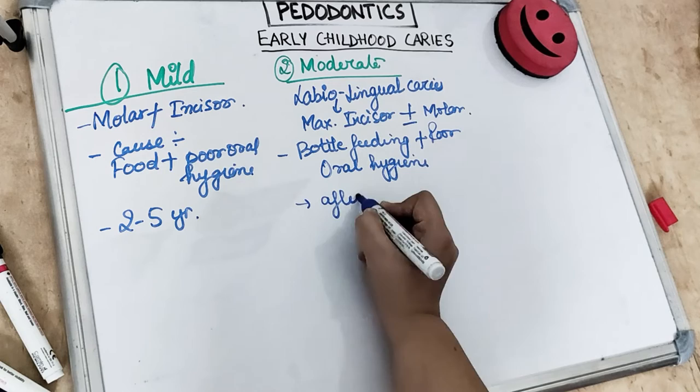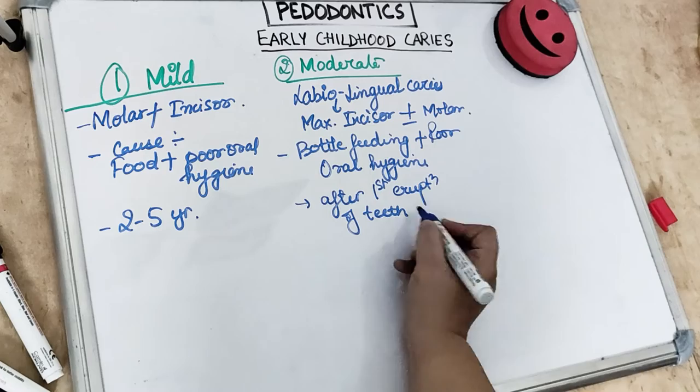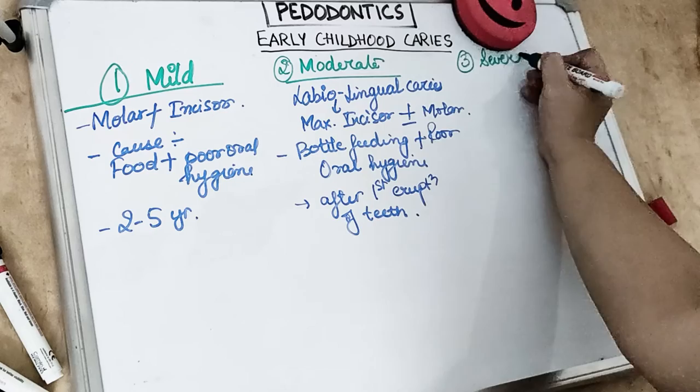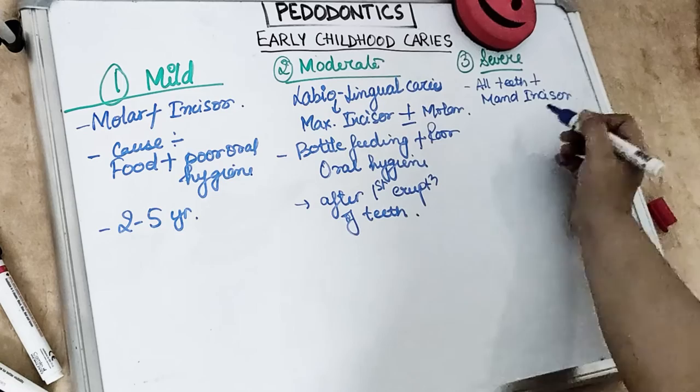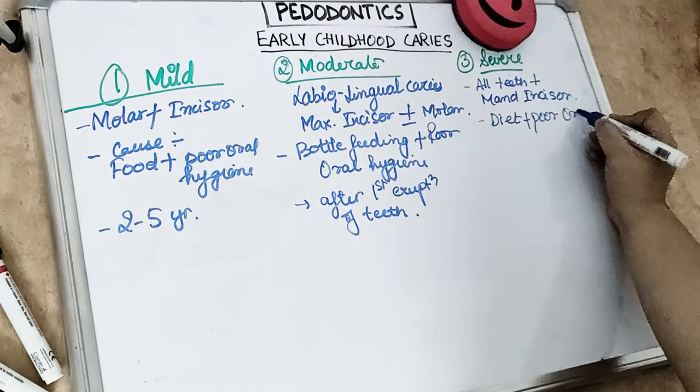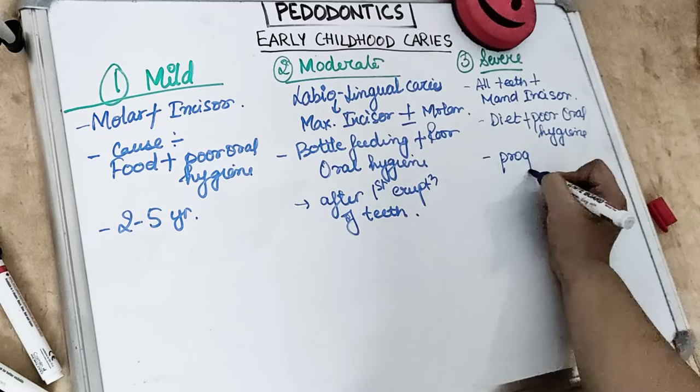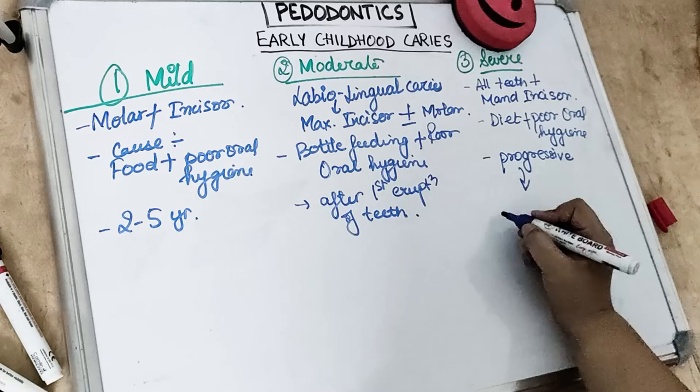Type 2 moderate-to-severe ECC occurs after the eruption of the first tooth. Type 3 — severe early childhood caries — affects all the teeth, especially involving the mandibular incisors, which were not involved in earlier types. The cause is a cariogenic diet and poor oral hygiene. It is a rapidly progressing condition involving all tooth surfaces and is known as acute or rampant caries.